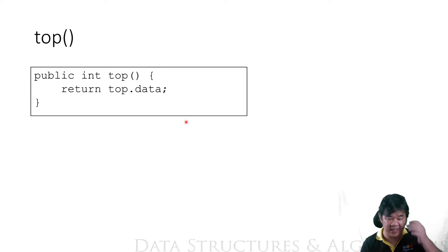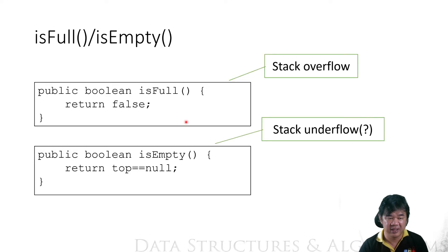Top just returns the data, which is actually faster than the array, right? Okay, isFull and isEmpty. Look at this isFull—I just return false. It's not going to be full, right? Well, sometimes it's going to be full.